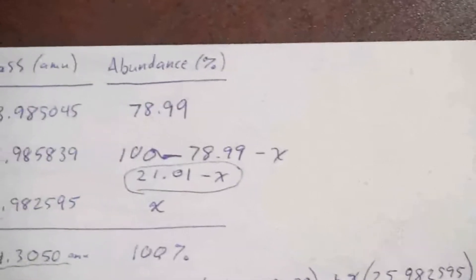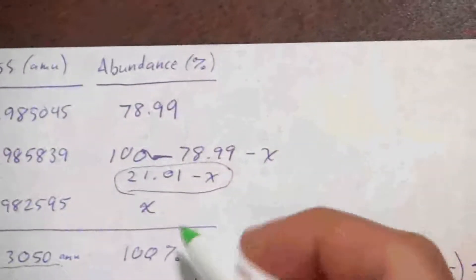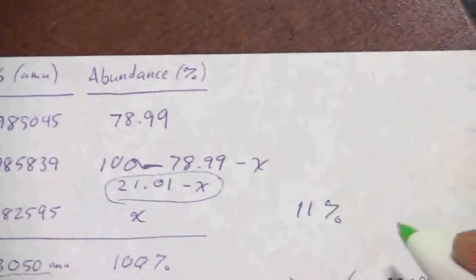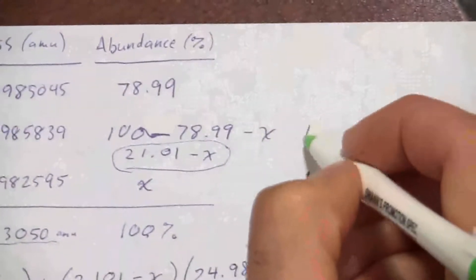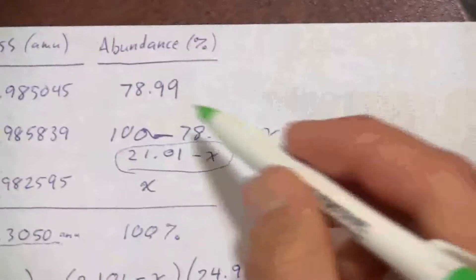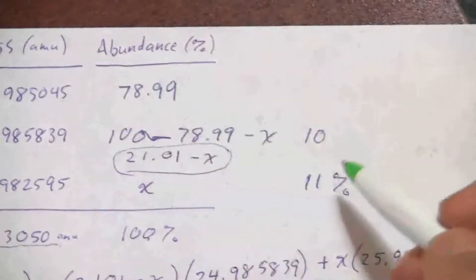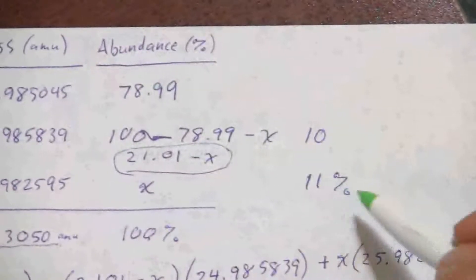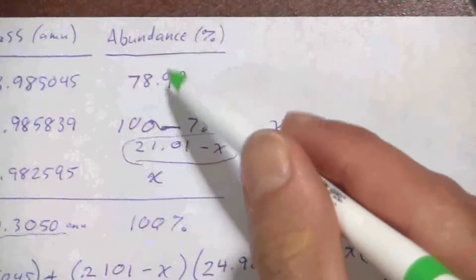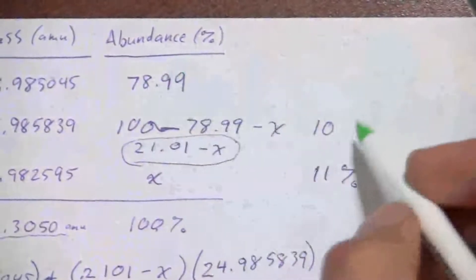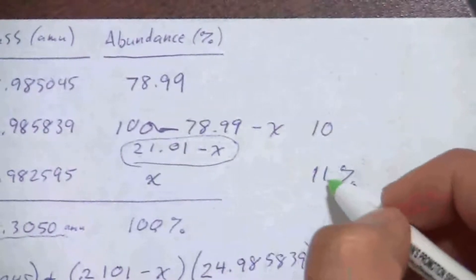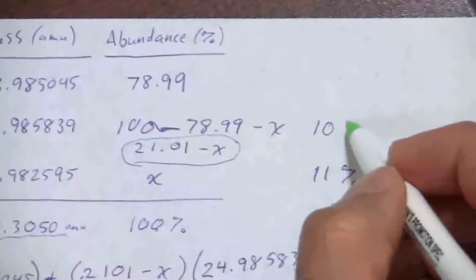Which, if I convert that to a percentage, this would be 11%, which means I would have 10% up here. Again, considering the fact that this is zero decimal places, I would round this to 79, and that'll leave me with 79, and this will bring it up to 90. So the 10% will be what remains of this isotope.